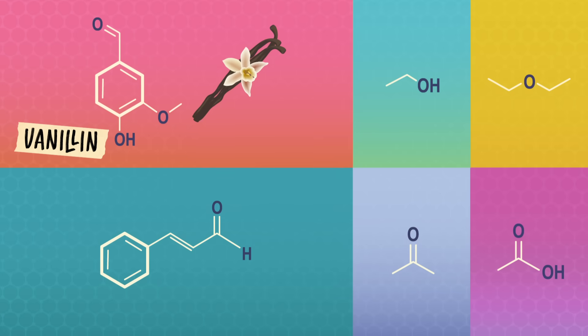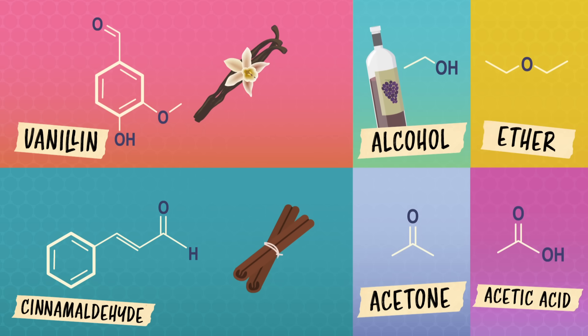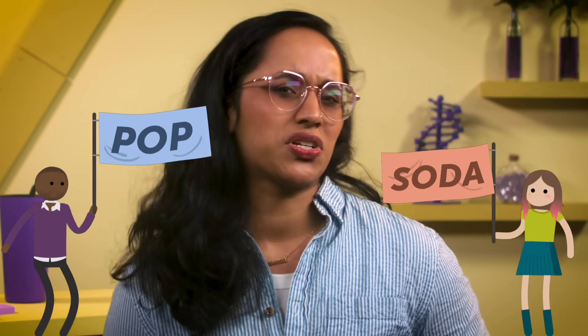By the time IUPAC came along with standard rules, organic chemistry as a field was already over a hundred years old. Many chemicals had common names given to them by the people who discovered them, based on their source, smell, or color. For instance, vanillin is isolated from vanilla beans, and cinnamaldehyde is isolated from cinnamon. Alcohol, ether, acetone, and acetic acid are common names too. While some common names might sound fun, you have to memorize them, and they don't tell you much. Not super useful for learning chemical structures. Sometimes chemists even disagreed about what each common name meant, sort of like regional differences about what to call a carbonated beverage. Despite IUPAC's best attempts to make organic chemistry nomenclature less confusing, many common names are still used today.